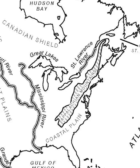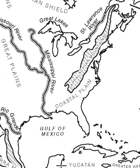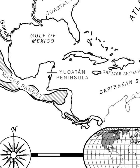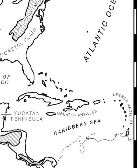Coastal lowlands stretch across the Atlantic Ocean and the Gulf of Mexico. Central America is an isthmus that connects the southern part of North America to South America. Most of the islands in the Caribbean Sea are formed by volcanoes, and groups of these islands are usually known as the Greater and Lesser Antilles Islands.